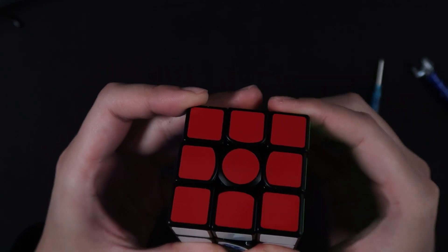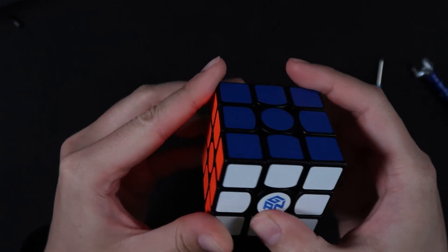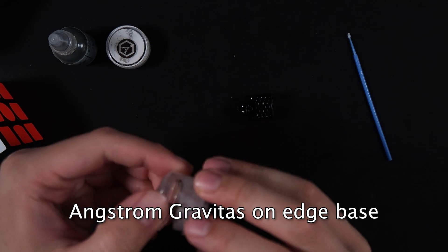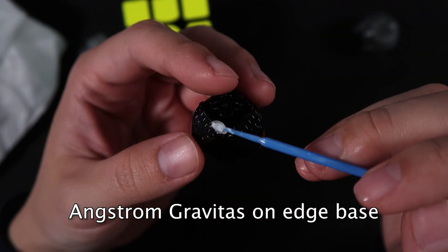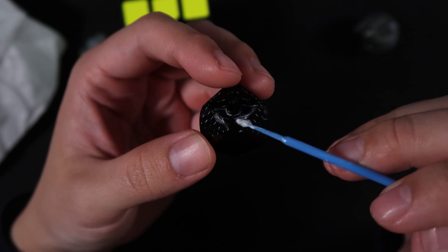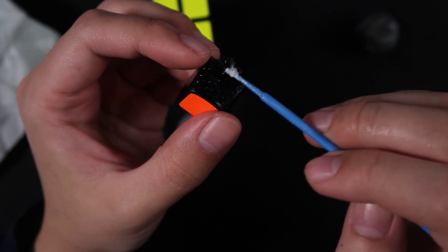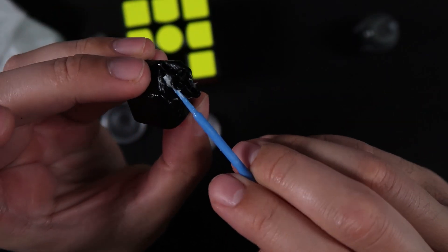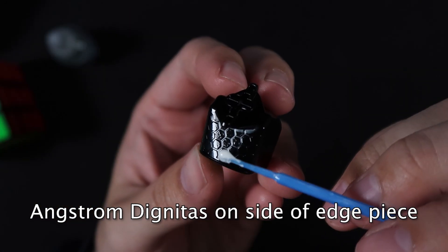After that it was time for lubing. I have a pretty standard way of lubing GAN cubes. I like to use Angstrom Gravitas on the bases of the pieces. I find that it slows down the cube a tiny bit and also evens out any small manufacturing defects that may exist. I also added some Angstrom Dignitas on the sidewalls of the pieces to make the cube feel a bit more plush and refined.